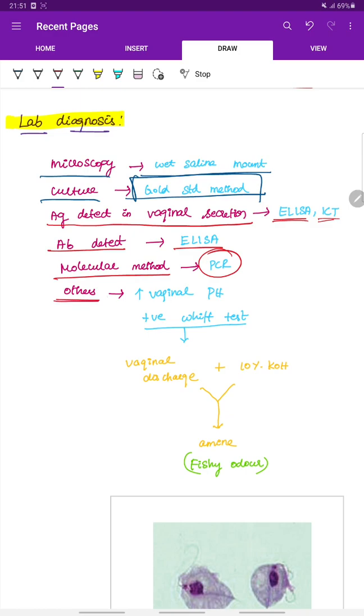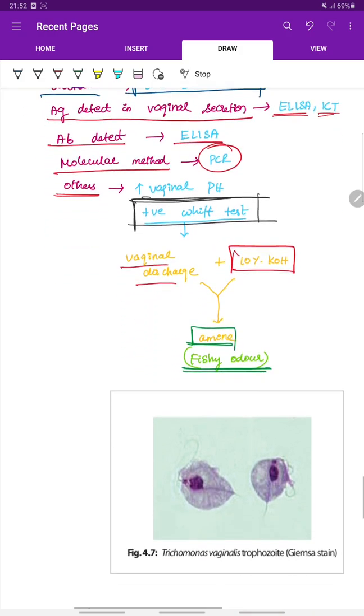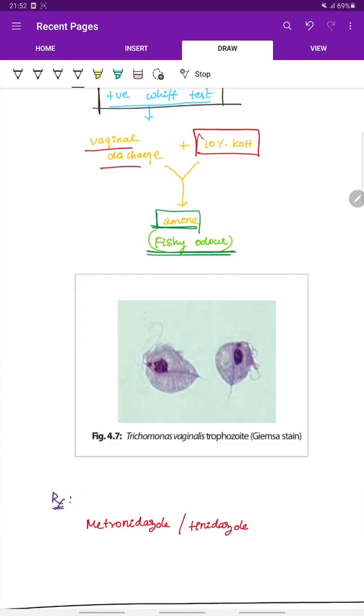Other methods of investigation include increased vaginal pH. There is positive whiff test. Here the vaginal discharge is taken and 10% potassium hydroxide is added to it. As there is increased vaginal pH, this reacts with potassium hydroxide to form an amine which gives a fishy odor. This is whiff test.